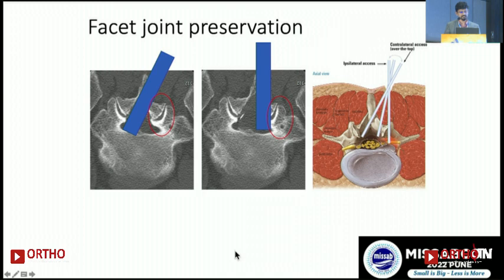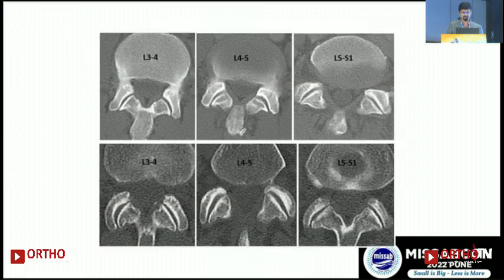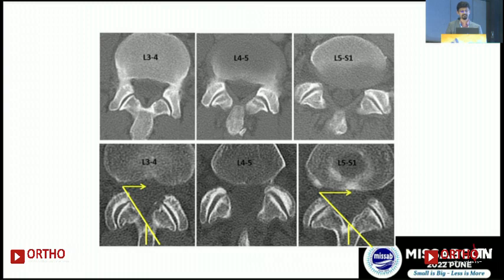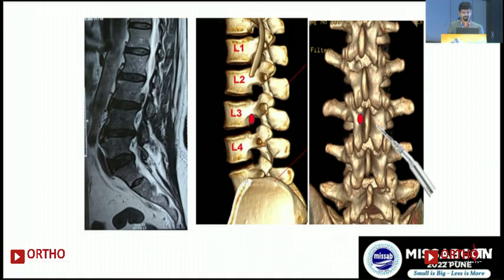The CT scan shows that facet violation is much less when going contralateral versus ipsilateral. However, this is not always feasible — it is not possible in some L5-S1 cases, but it is definitely possible for posterolateral central disc herniation at L3-L4. Retraction is much greater at L5-S1, making the contralateral approach more applicable at upper lumbar levels.